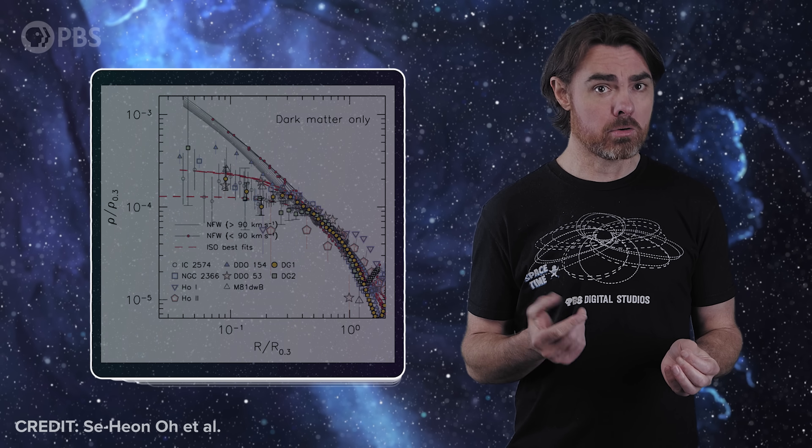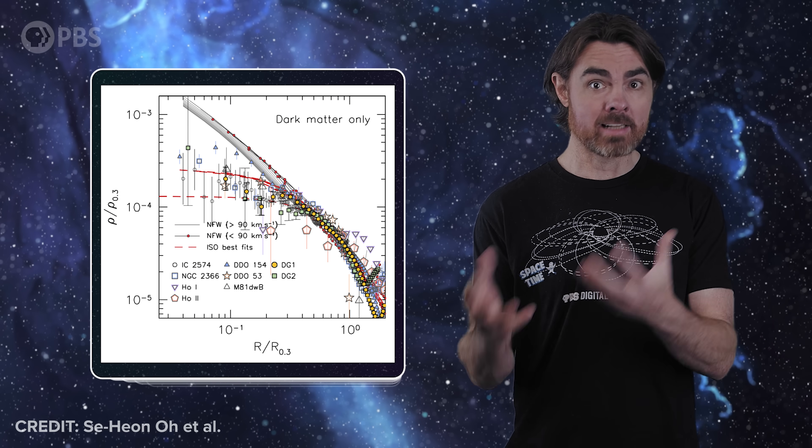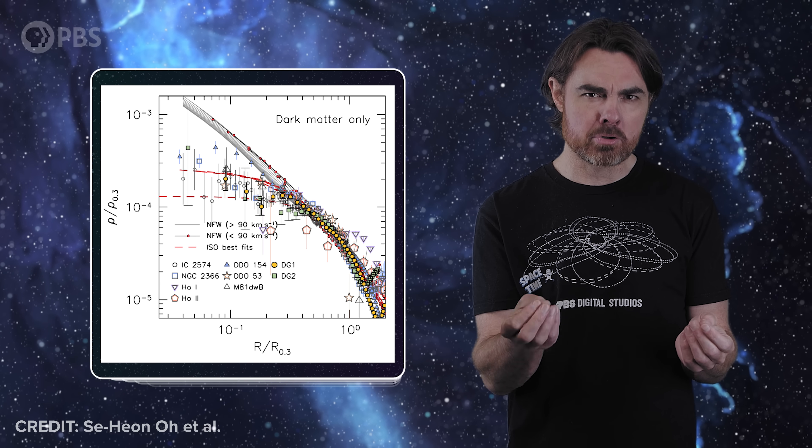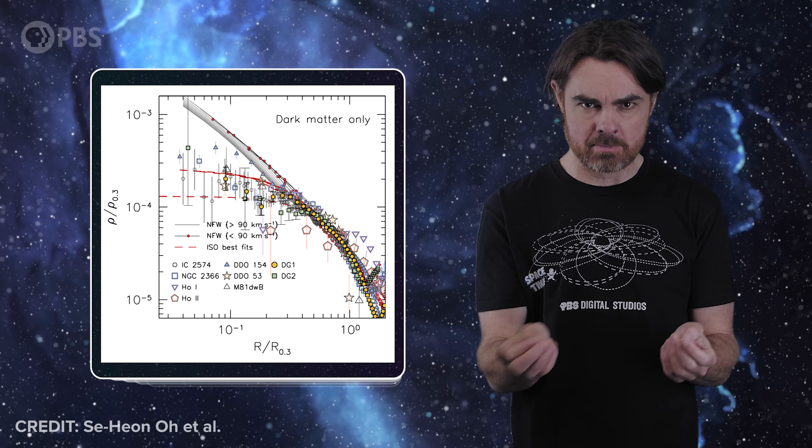Also, we see that in real large galaxies, density increases towards the center but then flattens out rather than producing a steep central cusp. Now I will say that newer simulations have been able to explain some of these discrepancies, for example by better simulating the role of regular matter in structure formation. But another potential fix is to use axionic dark matter.